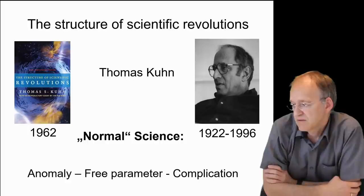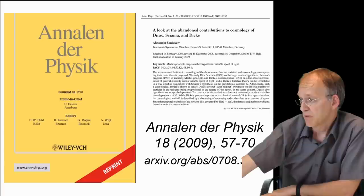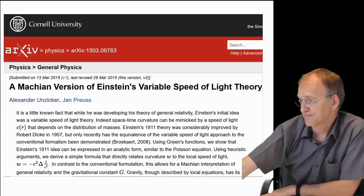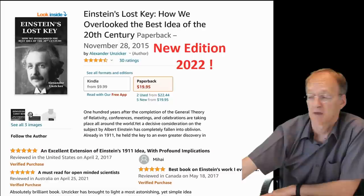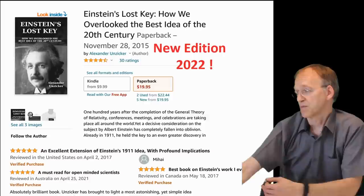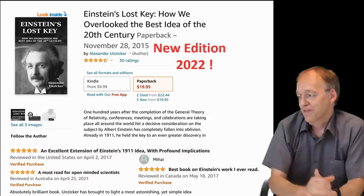You can find more about this in my paper in Annalen der Physik and also in this paper about variable speed of light. Of course, there's also my book Einstein's Lost Key: How We Overlook the Best Idea of the 20th Century, with all the consequences also in cosmology. It's a new edition in 2022. If you like the video, don't forget to give it a thumbs up, and if you are interested in fundamental questions, subscribe to this channel.